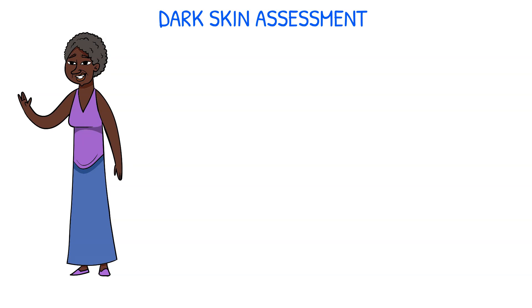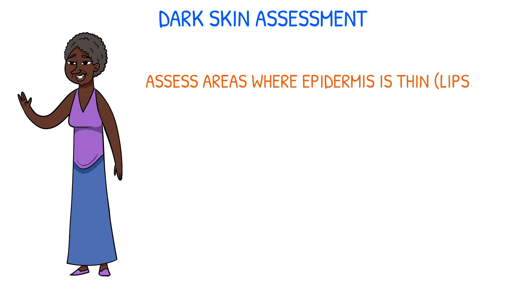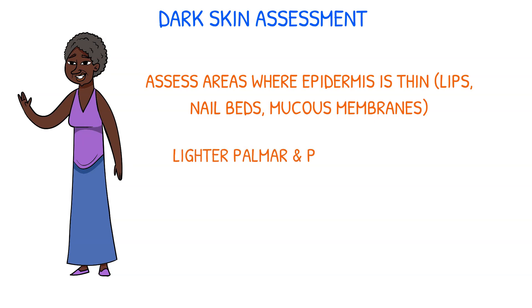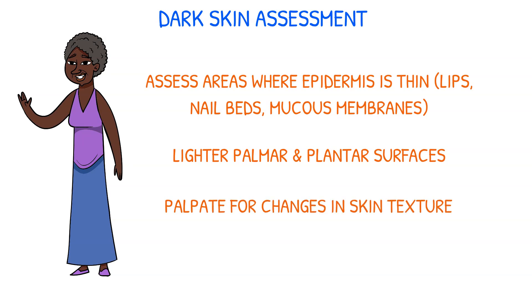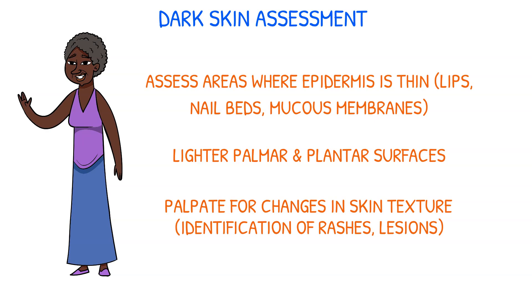Now let's move on to dark skin assessment. Although structures are not different, assessing color can be more difficult. Areas where the epidermis is thin, like the lips, nail beds, and mucous membranes, are easier to assess. Darker skinned individuals have lighter palmar and plantar surfaces. It's also important to palpate areas of concern, as changes in skin texture can help with identifying rashes or lesions.